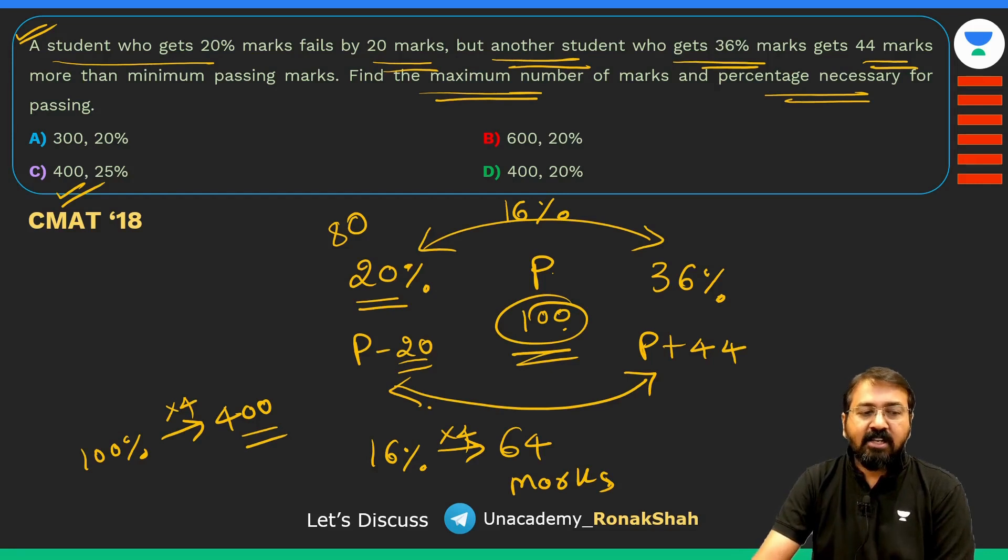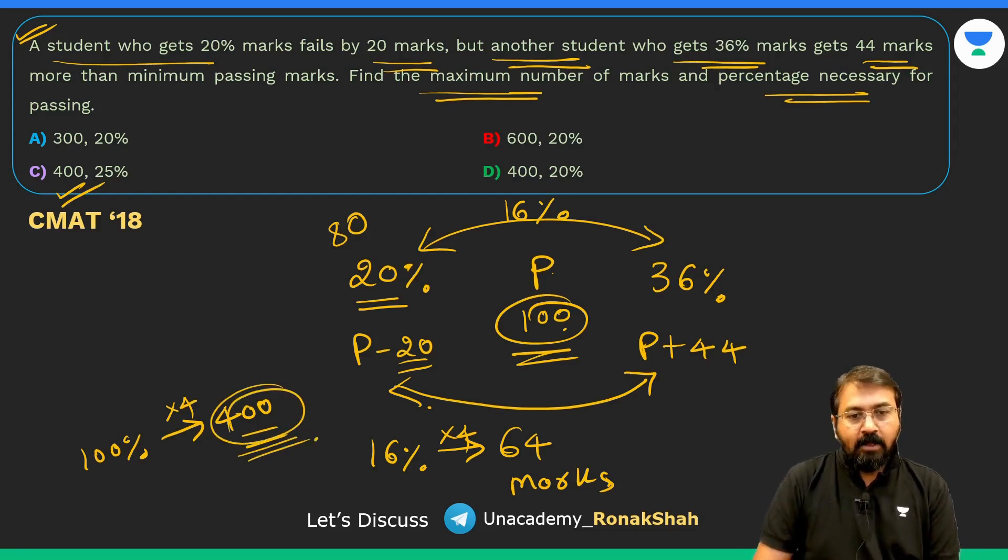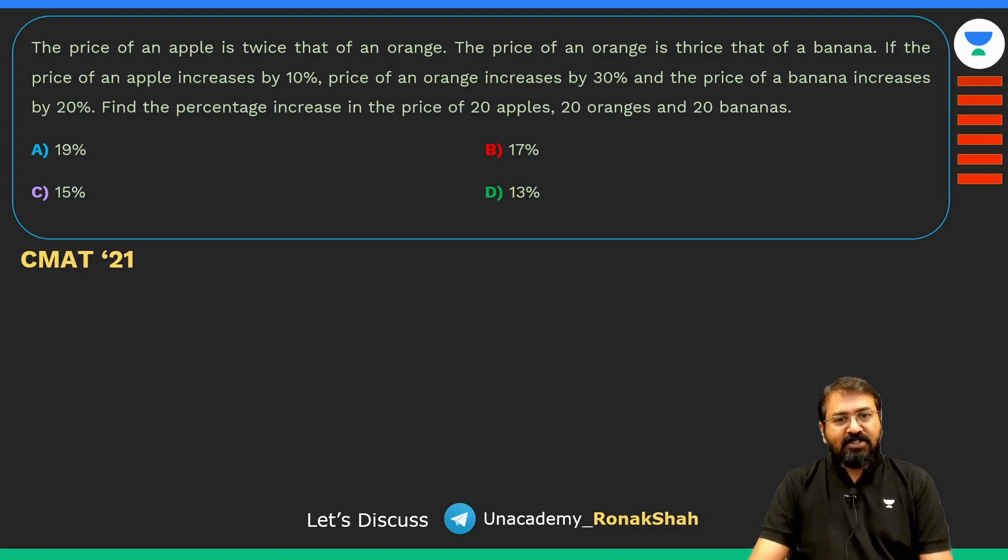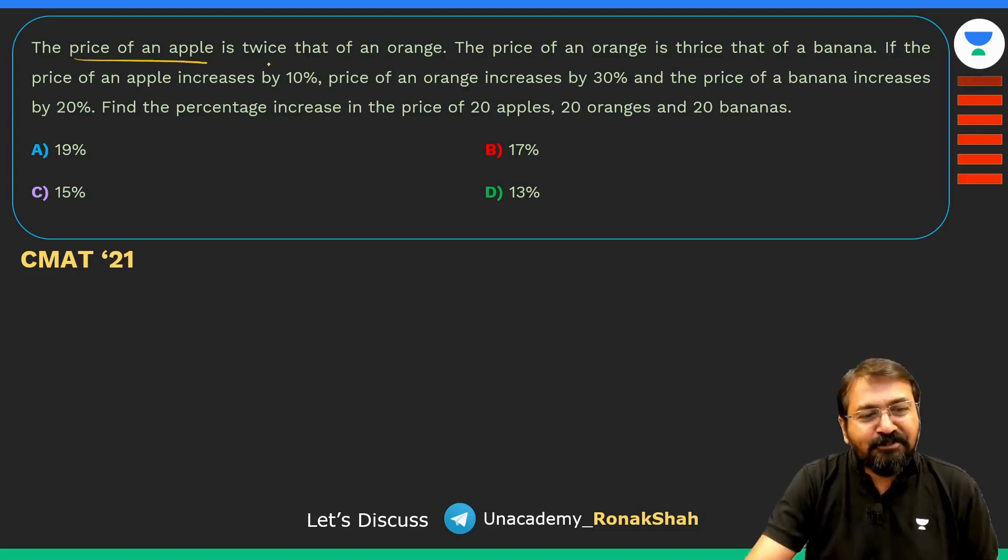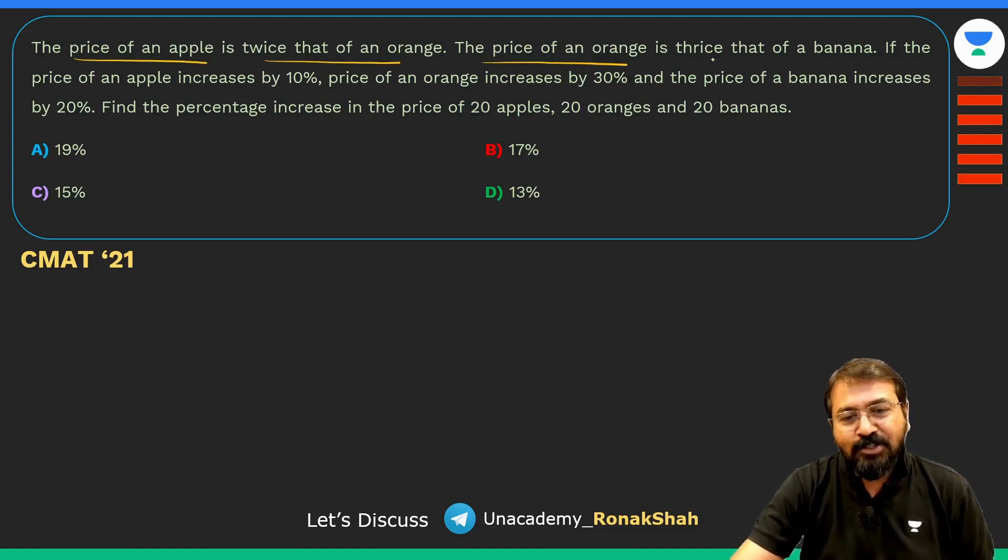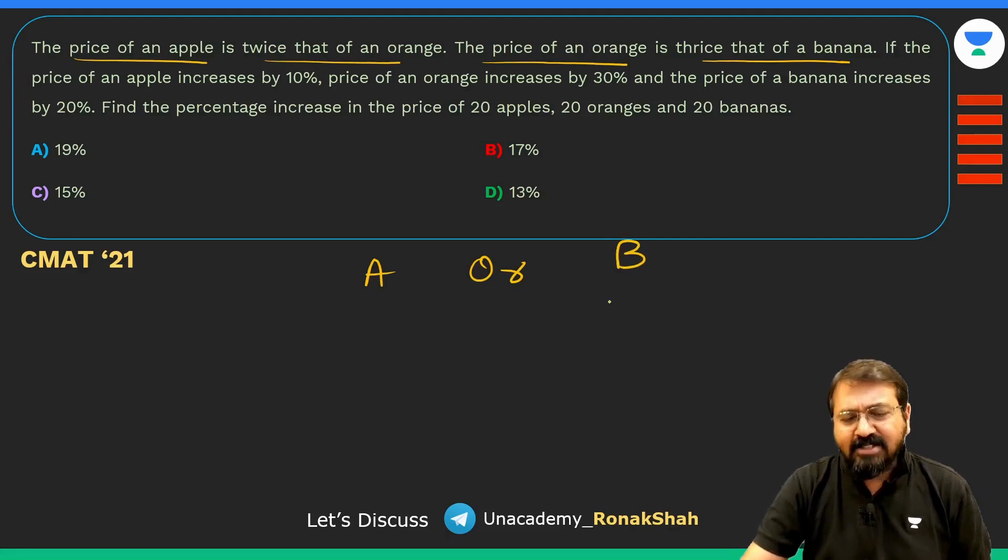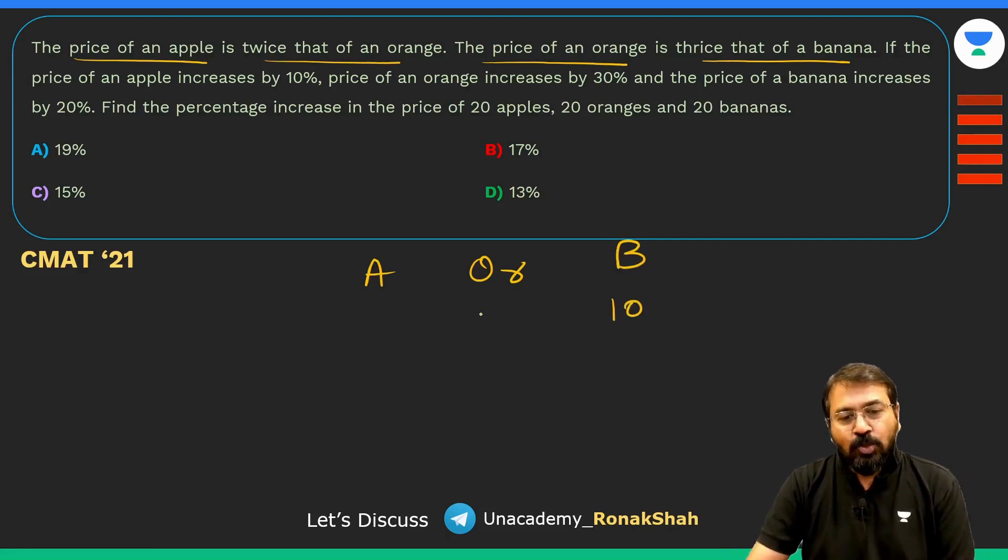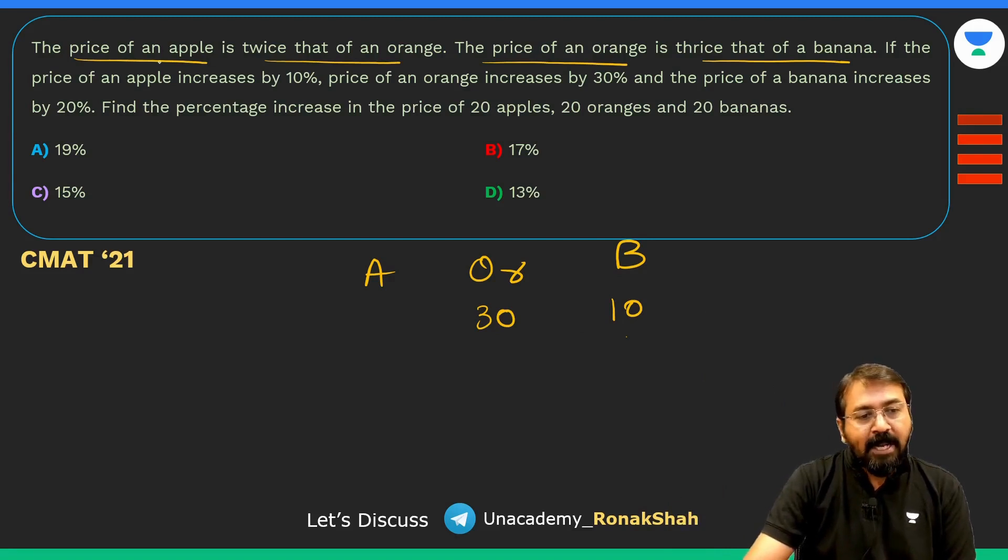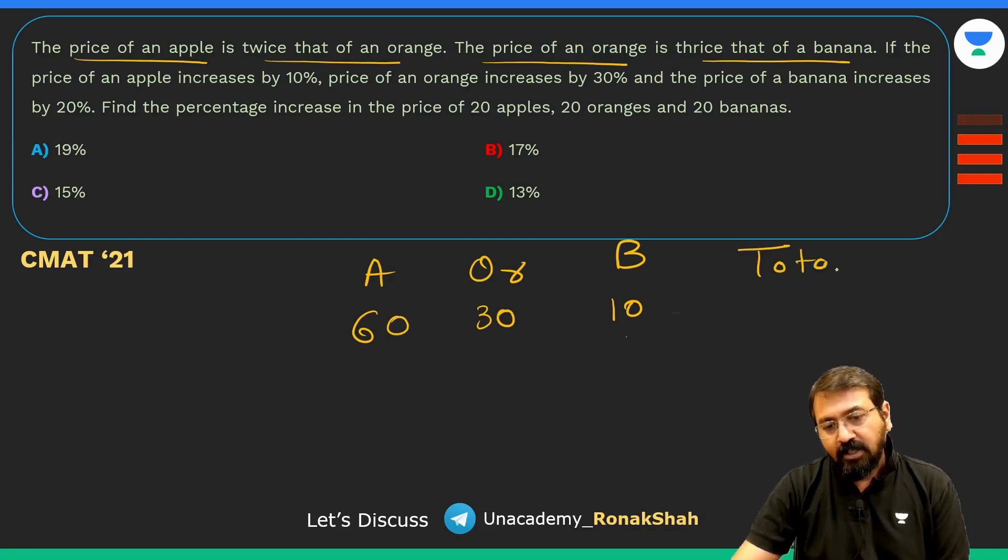Let's try for this question, very easy question. Price of apple is twice that of orange, price of orange thrice of banana. Apple, orange, banana. Let's assume price of banana is 10, so orange is three times, so it will be 30. Always start from last. First we assume price of banana, so we got orange as three times that is 30, and price of apple is twice of orange, so apple should be 60.